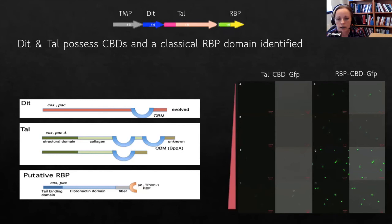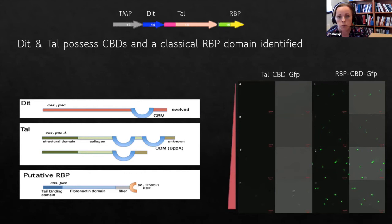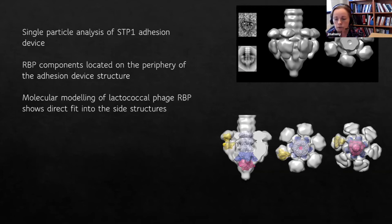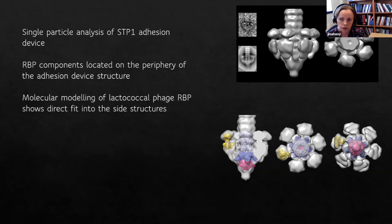To determine where this protein is located on the phage, we performed single particle analysis of the tail tip region of STP1 in collaboration with Christian Cambio and Adeline Goulet. Through single particle analysis and molecular modeling of lactococcal phage proteins into the obtained structure, we see a very good fit for protrusions around the base of the tail corresponding to the RBP — shown in yellow in the lower image. We now believe this is genuinely the receptor binding protein for this phage.